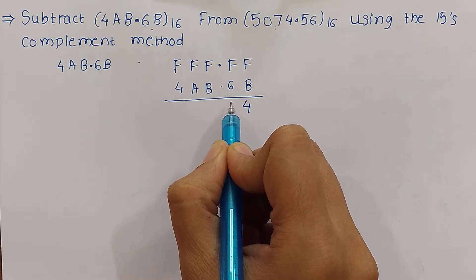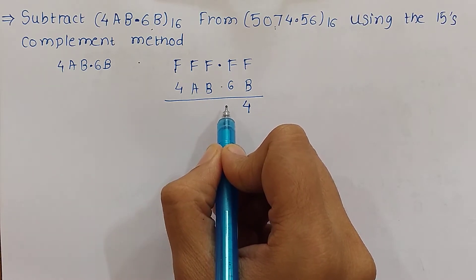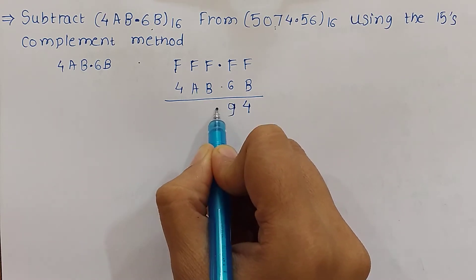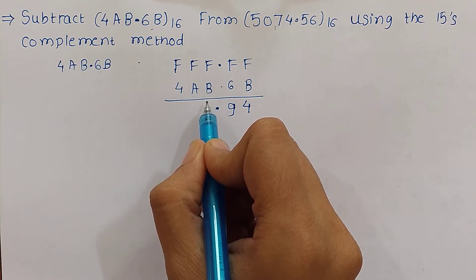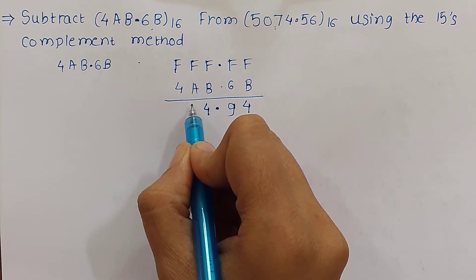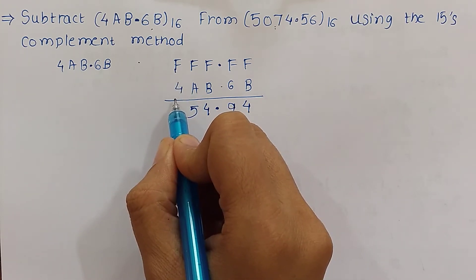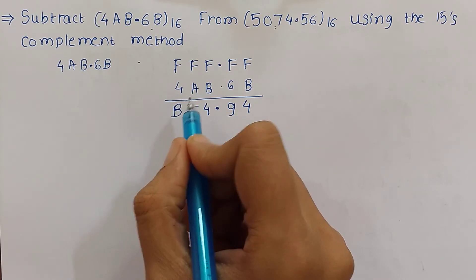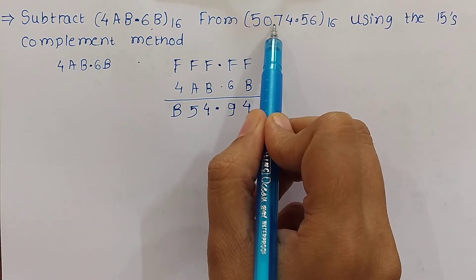Next digit: F minus 6 — F is 15 and 15 minus 6 is 9. Then F is 15 and B is 11, so 15 minus 11 is 4 again. F is 15 and A is 10, so 15 minus 10 is 5. F is 15 and 15 minus 4 is 11, which is B.